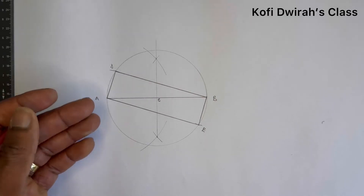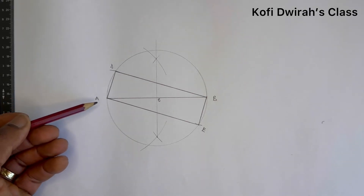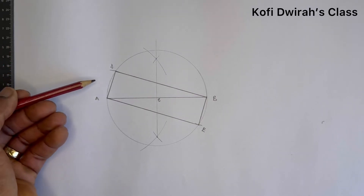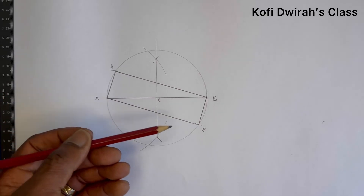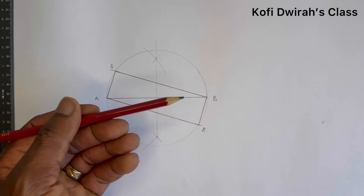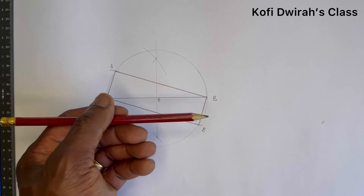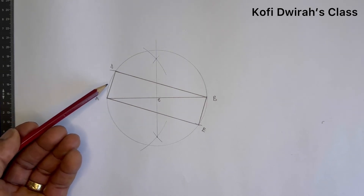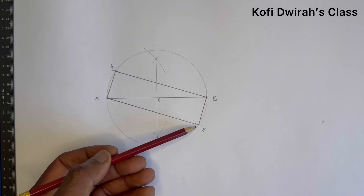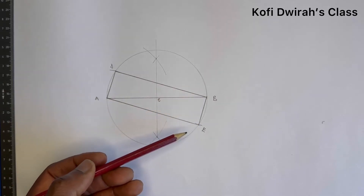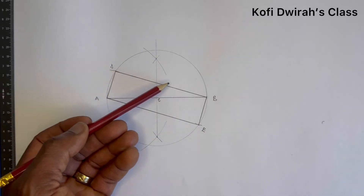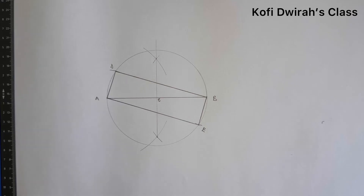This is how to construct a rectangle giving the diagonal and the side. We have side AD to be 30 millimeters or 3 centimeters, and side BE is also 3 centimeters or 30 millimeters, because in a rectangle two opposite sides are equal. So line AD equals line BE, and side AE equals side DB.